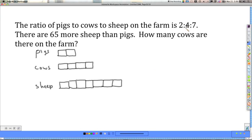Okay, so we've used that. There are 65 more sheep than pigs. All right, well, looking at pigs, they are 2 units, and the sheep are 7.